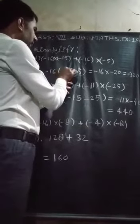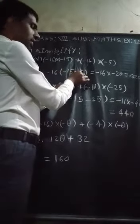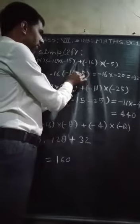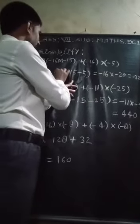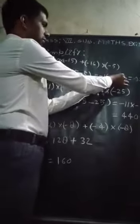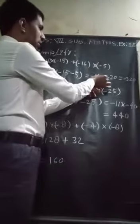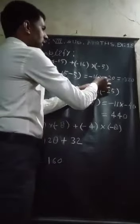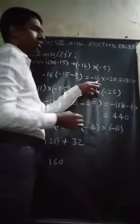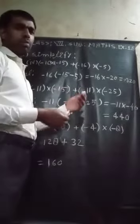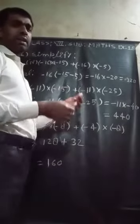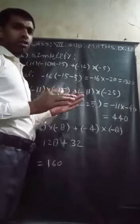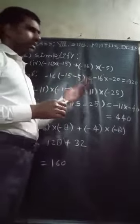Inside the bracket, minus 15 minus 5. So, minus 15 minus 5 will be minus 20, and minus 16 will be multiplied by minus 20. So, 16 into 20 gives 320. Because minus and minus multiplied gives plus — the product will be plus.